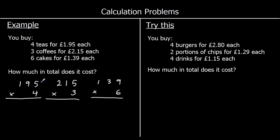Four fives are 20, so zero in the ones and carry two over into the tens. Four nines are 36, plus the two makes 38, so eight in the tens and the three goes over to the hundreds. Four times one is four, plus the three is seven. So that's 780p, or seven pounds eighty.